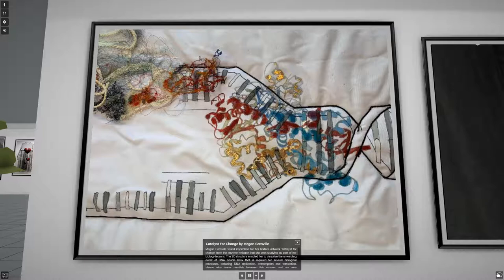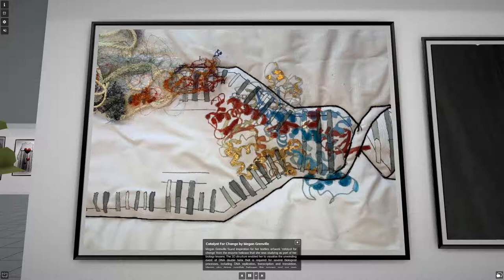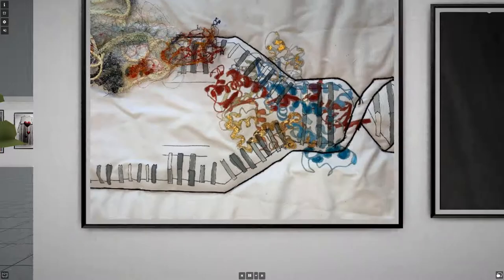Megan Grenfell found inspiration for her textiles artwork, Catalyst for Change, from the enzyme helicase that she was studying as part of her biology lessons. The 3D structure enabled her to visualize the unwinding event of the DNA double helix that is required for several biological processes, including DNA replication, transcription and translation. Megan also draws parallels between this process and our own emotional unraveling in the face of change and how it reflects our personal unwinding or struggle in the face of growth and change.